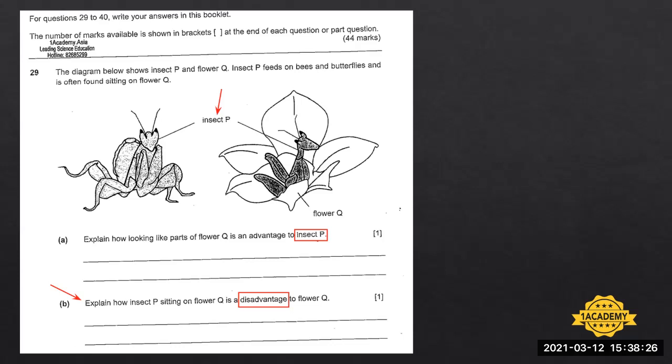Let's see the possible answers to this. So if the student answers by saying, insect P will eat the bees and butterflies. This is what will happen. This is what we meant by describe what will happen. In this situation, the students will not be awarded any marks, namely because the student did not explain why it is a disadvantage to flower Q.